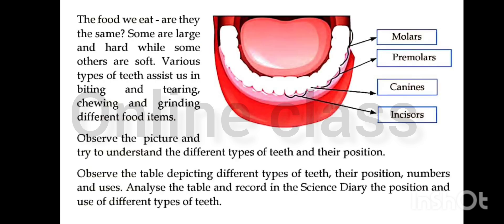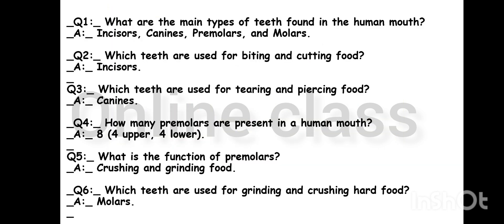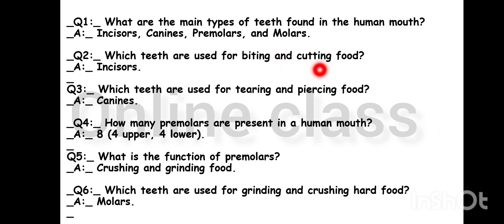Now we are going to learn about molars, premolars, and incisors. The incisors are used to bite and tear food items. The main types of teeth found in the human mouth are incisors, canines, premolars, and molars — four types of teeth. The incisors are used for cutting and biting.